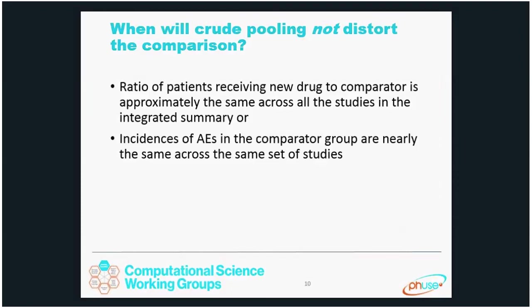There are some cases where crude pooling won't distort the comparison. One is when the ratio of patients receiving new drug to comparator is approximately the same across all studies in the integrated summary, and another is if the incidences of adverse events in the comparator group are nearly the same across those studies. The first condition is easier to verify in advance when writing your analysis plan. The second is harder to confirm in advance, especially with many adverse events, unless you have nearly identical copycat studies. So I tend to use the first condition to decide whether study size adjusted percentages are needed.